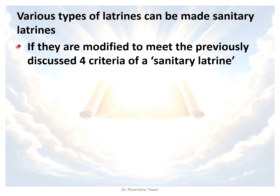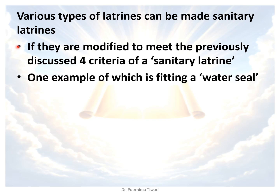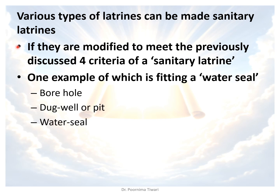Any modification which takes care of the four criteria allows us to call it a sanitary latrine, with the water seal being one such modification. Various types of latrines such as borehole, dug well, water seal, and septic can all be turned into sanitary latrines if you modify them to satisfy the four criteria previously discussed.